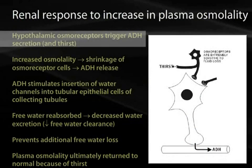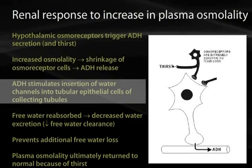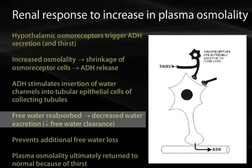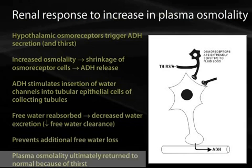To summarize the renal response to increased plasma osmolality: an increase in plasma osmolality is sensed by the hypothalamic osmoreceptors, stimulating ADH secretion from the pituitary gland as well as thirst. ADH stimulates insertion of water channels into the tubular epithelial cells of the collecting tubules and placement of urea transporters. Increased urea reabsorption facilitates increased water reabsorption, resulting in decreased free water excretion — also known as decreased free water clearance — and plasma osmolality returns to normal.